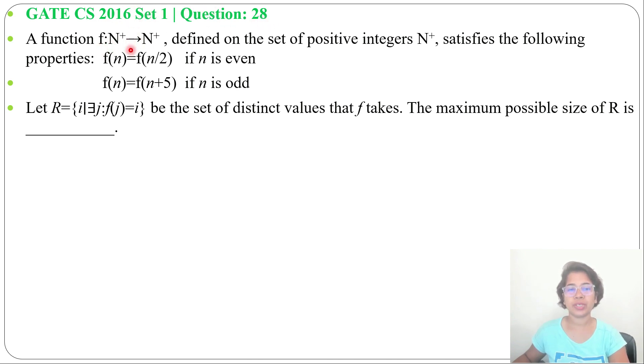A function f: N+ → N+, defined on the set of positive integers N+, satisfies the following properties: f(n) = f(n/2) if n is even.